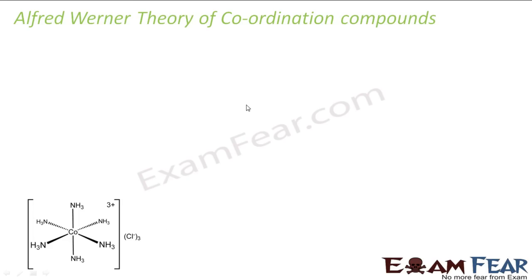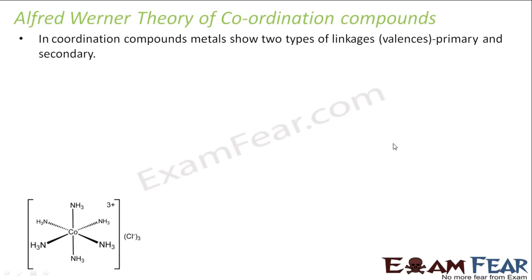Let us see Werner's theory of the coordination bond. He proposed that in a coordination compound the metal shows two types of linkages or valencies called primary and secondary valencies. Primary valency is nothing but the oxidation state of the central atom — these chlorines are attached via the primary valency. Secondary valency is the number of groups, called ligands, that are directly attached to the central metal. In this case, the secondary valency is 6 and the primary valency is 3.